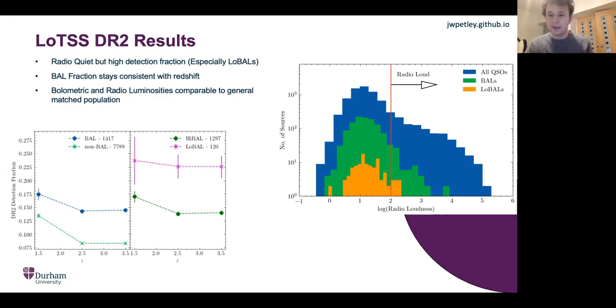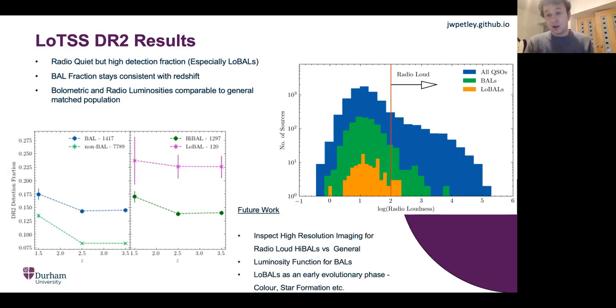So this is rather puzzling. As I showed you in the last slide, low BALs typically have stronger outflows and a much higher detection fraction, yet they're radio quiet compared to the rest. This is something that I'm hoping to explain in the near future.